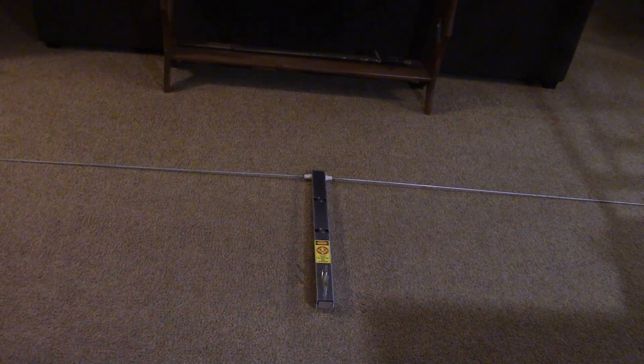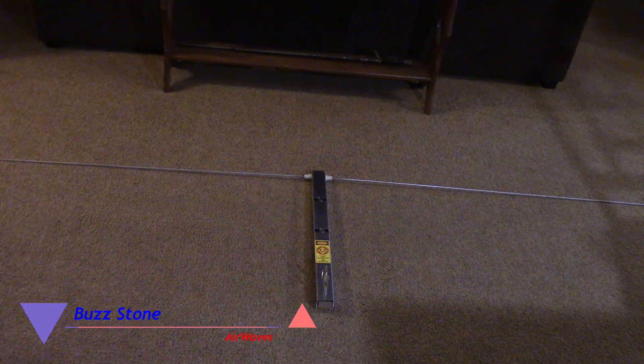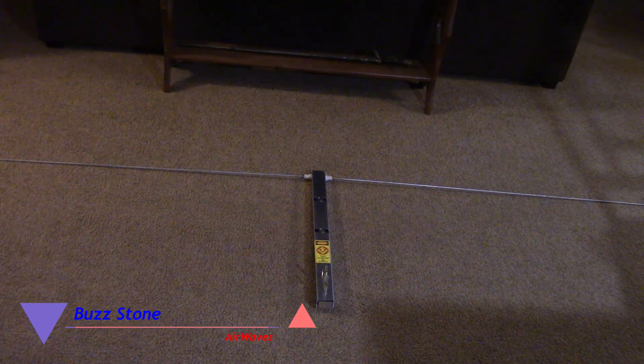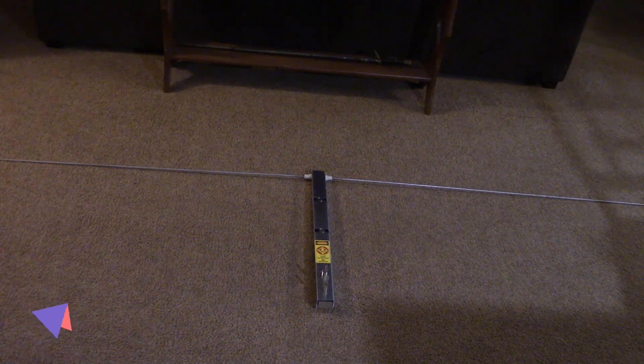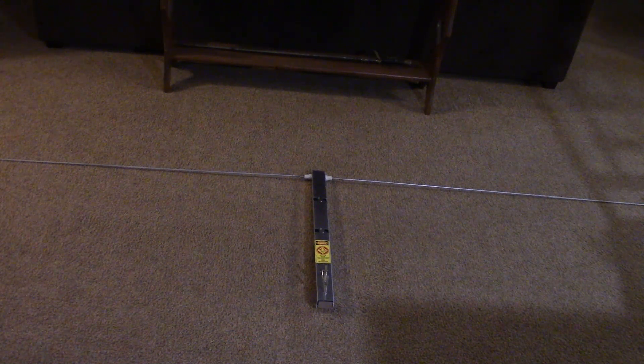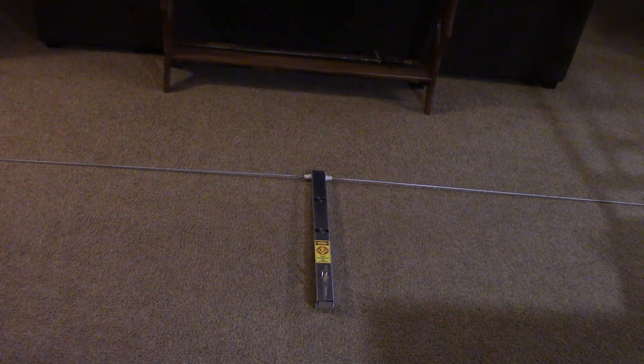Hey, this is Buzz with episode number 28 of Airwaves, and I've got a new addition to my antenna farm. It's an MFJ dual band, 2 and 6 meter, 5 eighths wave super gain antenna. And I've got all the details up next on Airwaves.